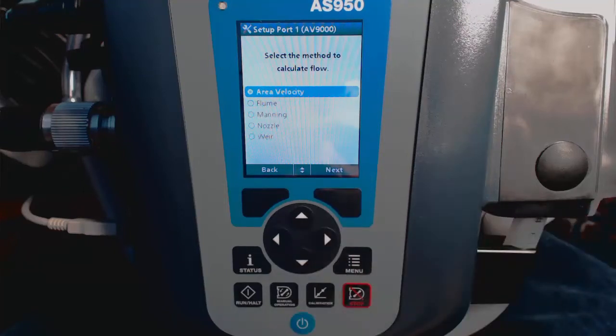Next we will select the flow calculation method, and with an AV9000, you're most likely to be choosing Area Velocity. Now we'll enter the Geometry and Dimensions.